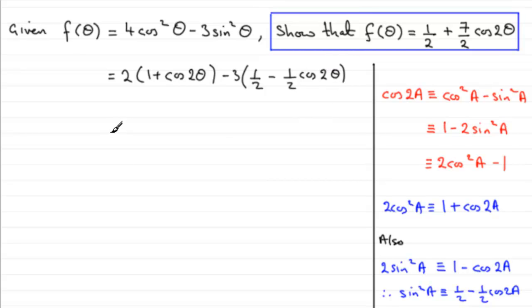So all we need to do now is just start to expand this out. So if we expand the first bracket, we've got 2 times 1 is 2, and 2 times cos 2 theta is 2 cos 2 theta. Expand the second bracket now, we've got minus 3 times 1 half is minus 3 over 2, and minus 3 times minus 1 half cos 2 theta is plus 3 over 2 cos 2 theta.